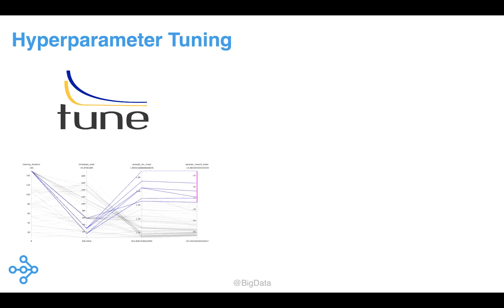Let's take a closer look at two widely used libraries. Tune is a popular Python library for experiment execution and hyperparameter tuning at any scale. Hyperparameter tuning is the computationally intensive process of choosing an optimal set of hyperparameters for a machine learning model. There are already many users of Tune spanning different application domains, and it is now one of the more popular open source libraries for hyperparameter tuning.